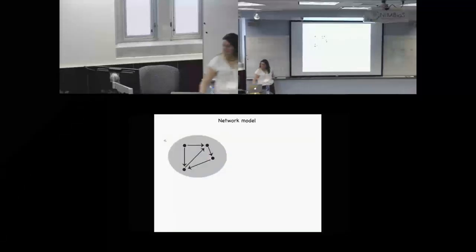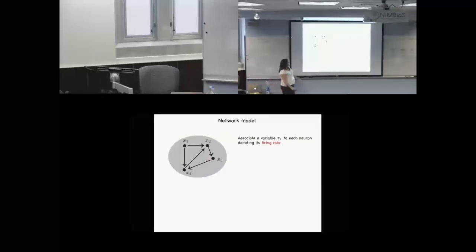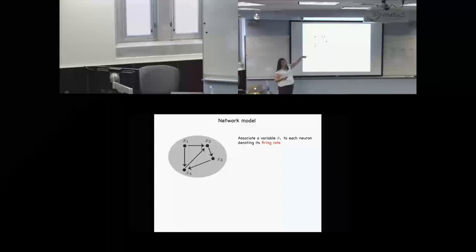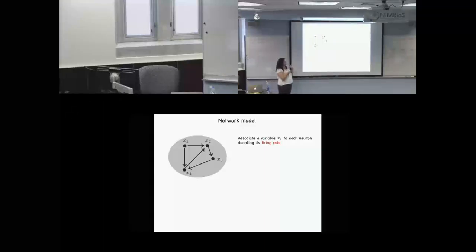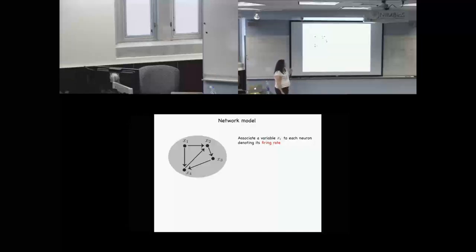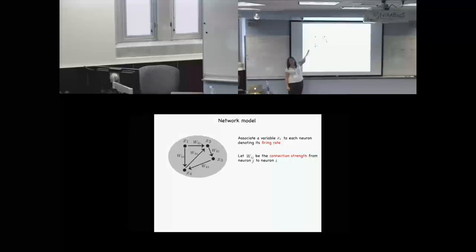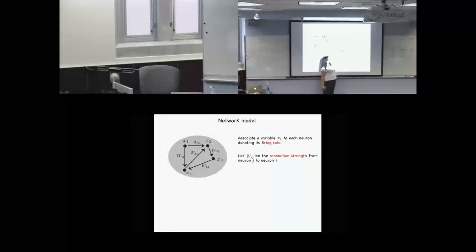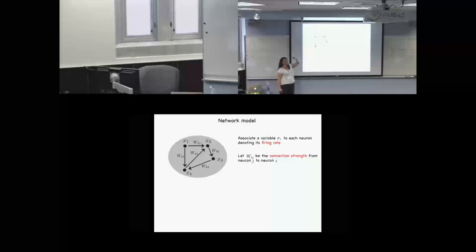What is that model really going to consist of? First, we're going to assign variables to each of our neurons that need to capture some characteristic of their firing. In our case, we're going to focus on the firing rate. In other areas of the brain, that might not be the information-carrying mechanism. To each of our edges or synapses, we're going to assign a weight or connection strength. W-IJ is actually the strength from neuron J to neuron I — that's standard in neuroscience.